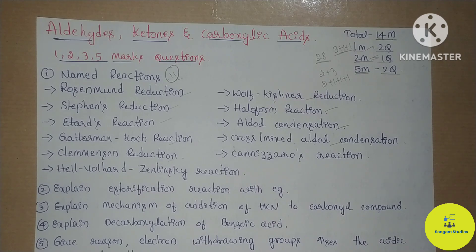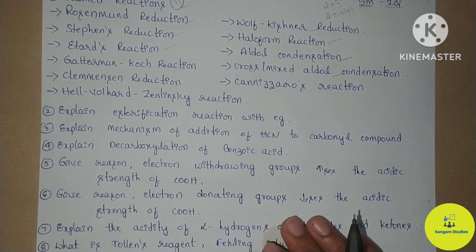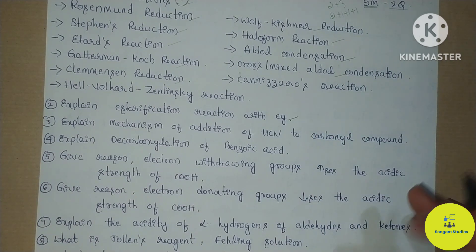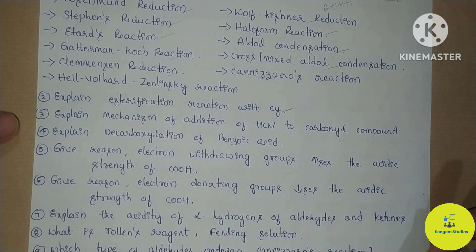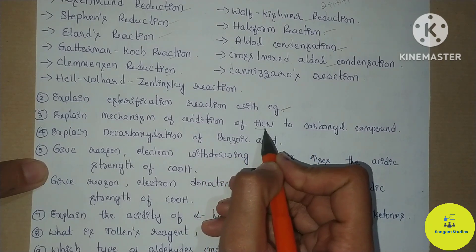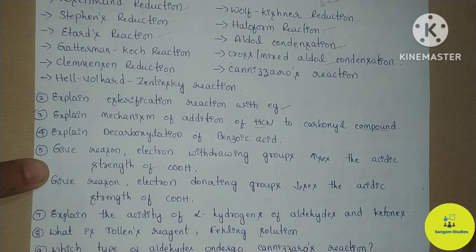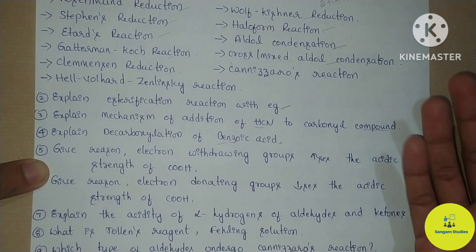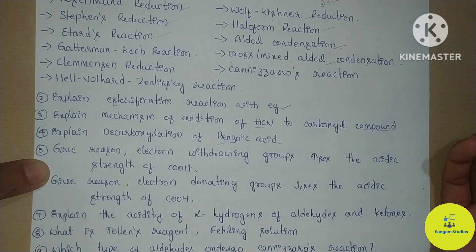You have 10 types of questions from these reactions. Fischer esterification reaction with an example is important — that is 2 marks. The mechanism of addition of HCN to a carbonyl compound is also important. Decarboxylation of benzoic acid is a splitting-type question worth 2 marks.